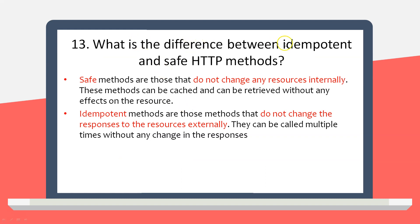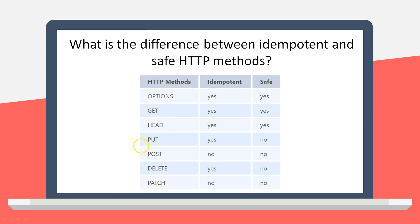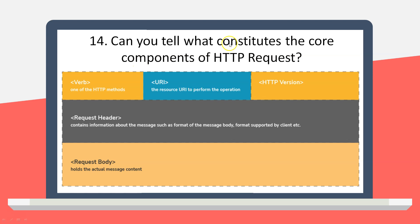Next question: what is the difference between idempotent and safe HTTP methods? Safe methods are those that do not change any resource internally — they can be cached and retrieved without any effects on the server. Idempotent methods are those that do not change responses to resources externally — they can be called multiple times without any change in the responses.